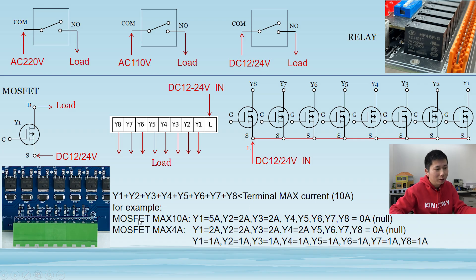So, you can see, for example, the first one, you can see, if you use this board, max is 10A MOSFET. So, if Y1 is 5A, Y2 is 2A, Y3 is 2A. So, add together, is 9A. So, you'd better, let your 4, 5, 6, 7, 8, don't connect any load. Just, make sure, the max current, is less than 10A.